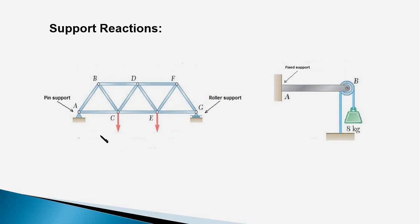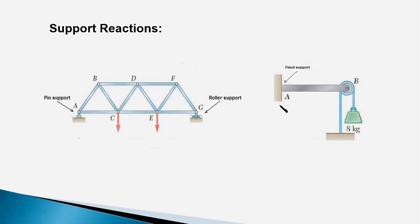Here is a picture of a bridge truss with a pin support at one end and a roller support at the other end. The load on the bridge gets transferred to the pillars of the bridge and subsequently to the ground through these supports. The picture on the right is that of a beam which is fixed to the wall, and this support is called a fixed support. The load on the beam gets transferred to the wall through this type of support.